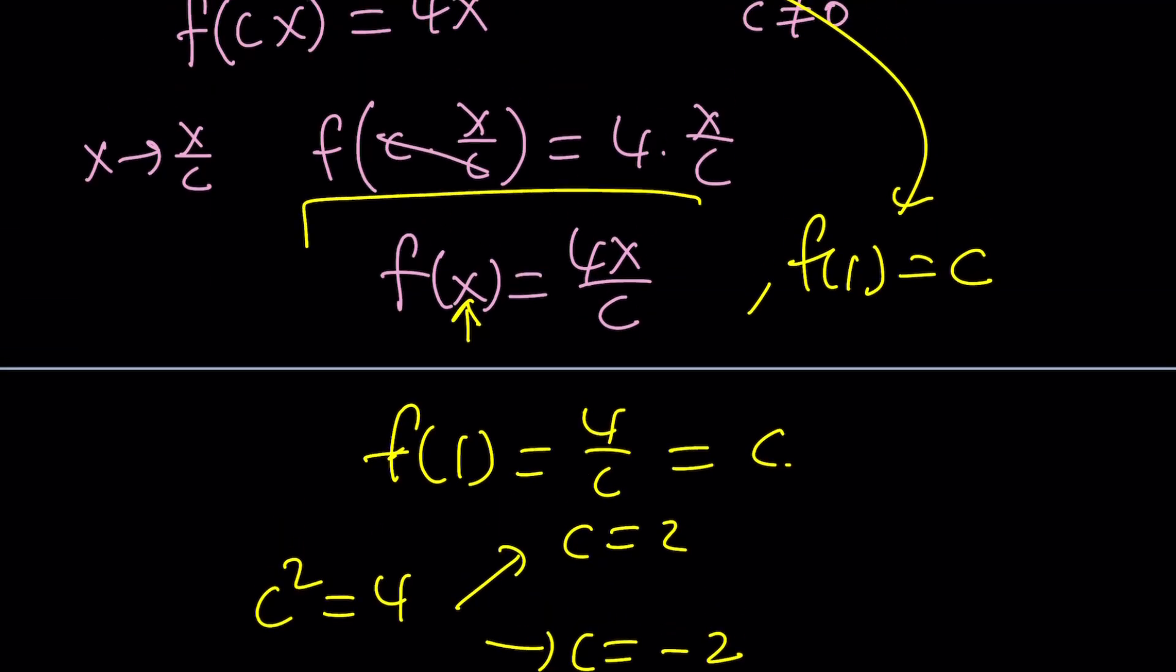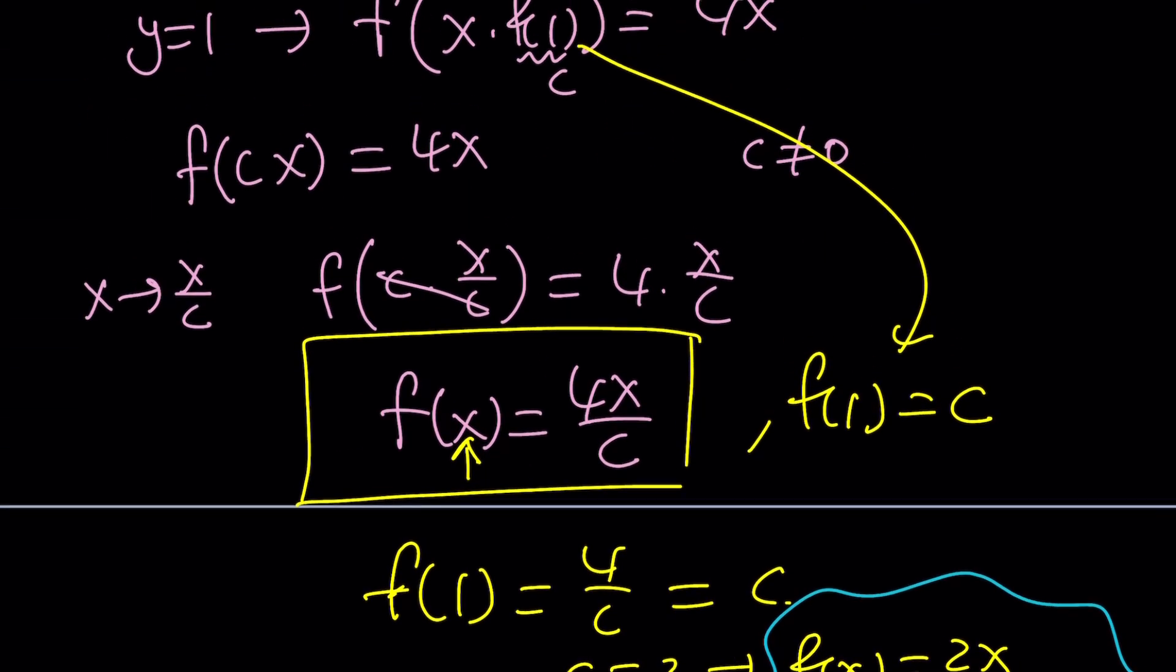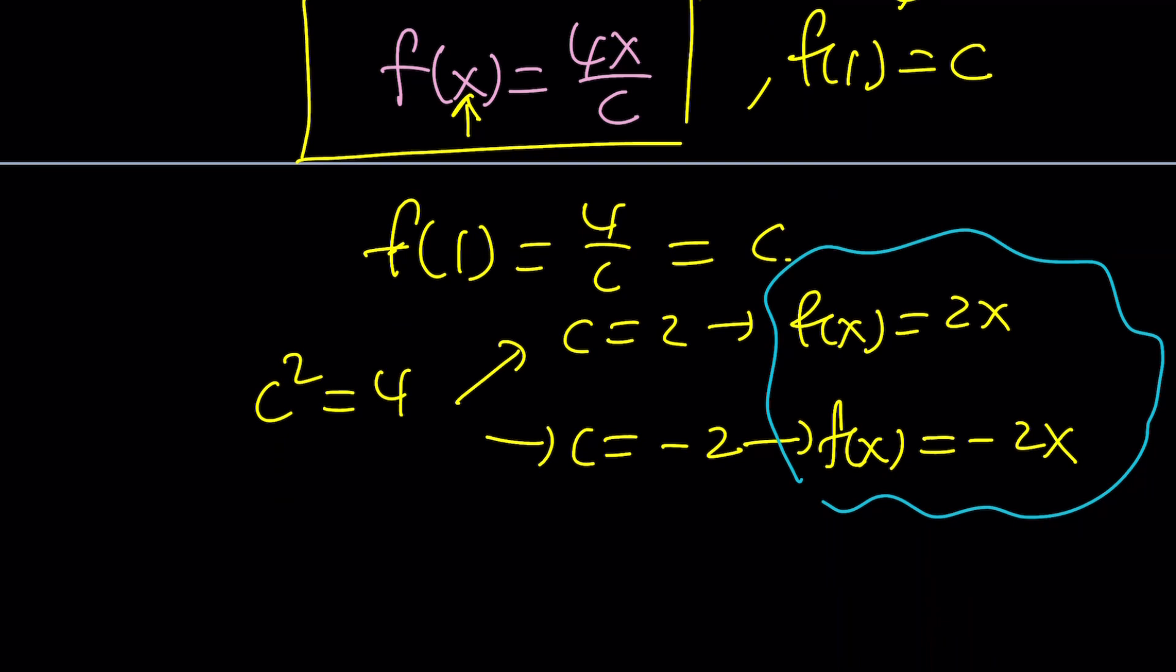But notice that f(x) could be written as 4x divided by c. If you divide by 2 you get f(x) equals 2x. If you divide by negative 2 you get f(x) equals negative 2x as before. Now using this method obviously we did not make any assumptions. We did not assume that f must be linear. And you can kind of check that f(1) in this case is not going to be 0. So we are good to go.